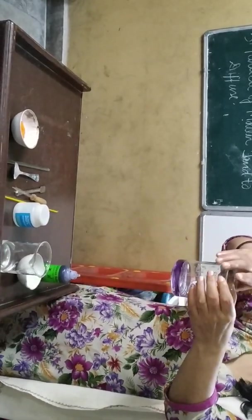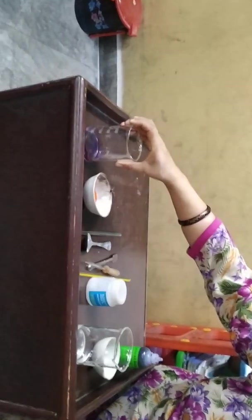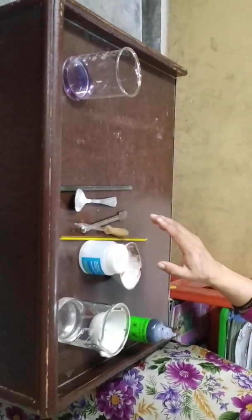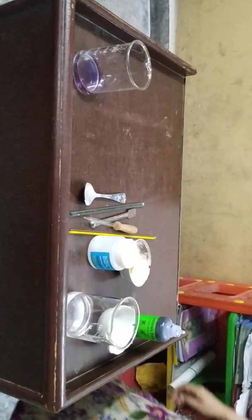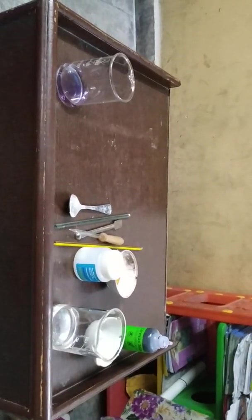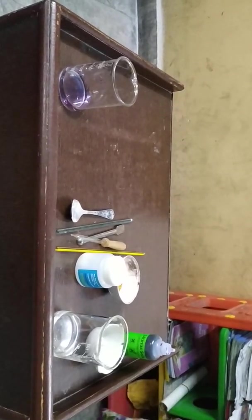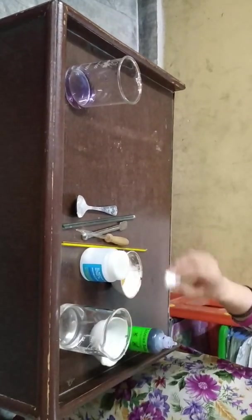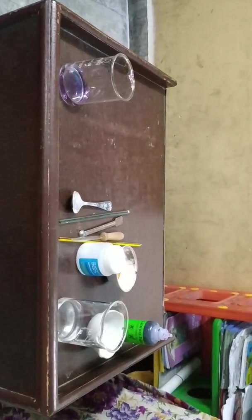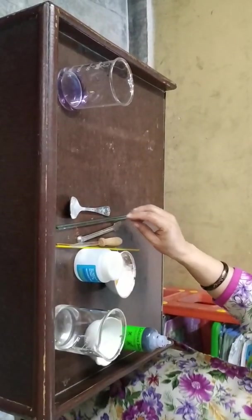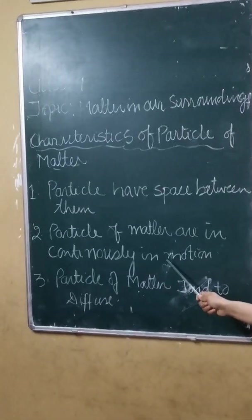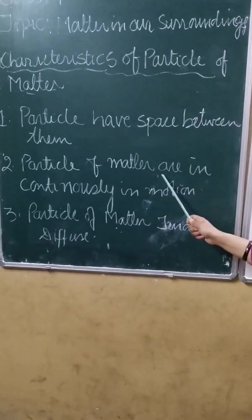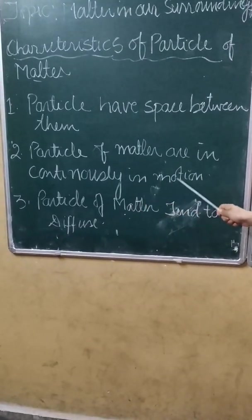The question is: why are the particles in motion? The particles of matter are in motion because they have kinetic energy. Kinetic energy is the energy possessed by a particle when it is in motion — any object which is in motion has kinetic energy. So the second characteristic has been proved: particles of matter are in continuous motion because they possess kinetic energy.